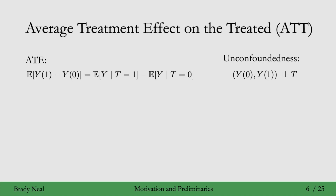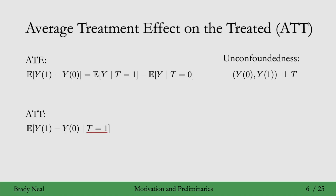But there are other causal estimates to be interested in. For example, one really common one is the average treatment effect on the treated, which we'll denote as ATT. This is just the average treatment effect, but now we are specifically looking at the treated group — we're conditioning on T equals 1. So we don't care about the average treatment effect in the control group if this is the estimate we're interested in.